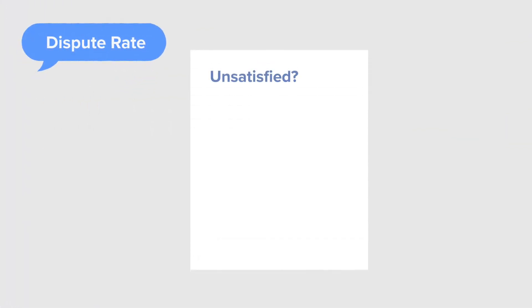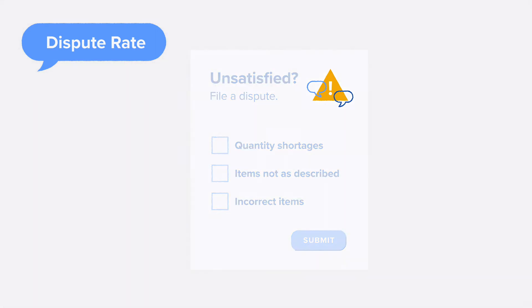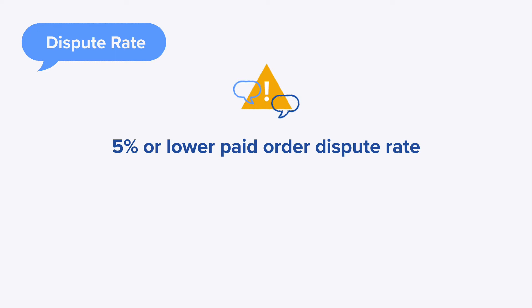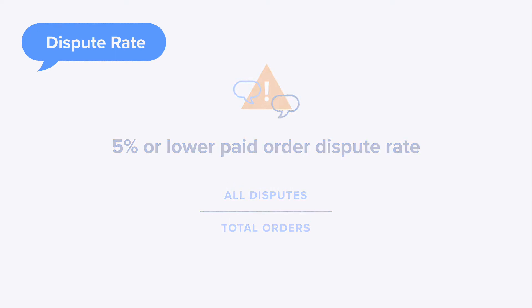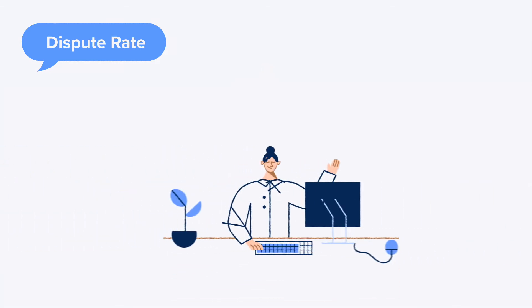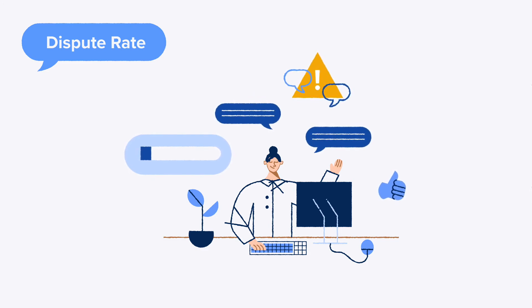B-Stock allows buyers to file a dispute if they are unsatisfied with their order. This can include quantity shortages, items that are not as described, or incorrect items. Our expectation is that sellers maintain a 5% or lower paid order dispute rate, calculated by dividing all disputes by total orders. Sellers who maintain a low dispute rate are providing great customer service and are more likely to have repeat buyers, which is a seller's key to success on B-Stock.